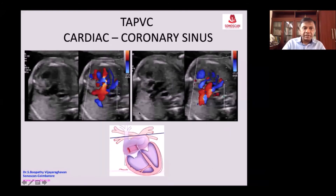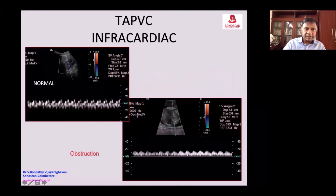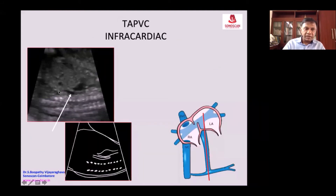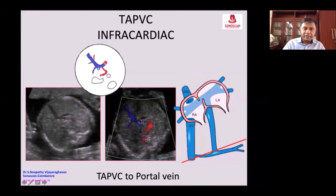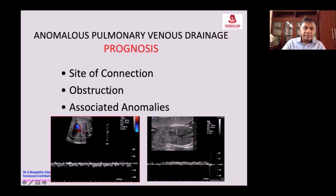Here again you see the pulmonary veins joining together and immediately opening into the coronary sinus. Through the four-chamber view you see the pulmonary veins joining together, and then the vertical vein going down into the abdomen. It goes from there into the abdomen, passing and joining the portal vein. This is the additional vein coming and joining the portal vein — the difficulty of surgery depends on whether it is obstructed or not.